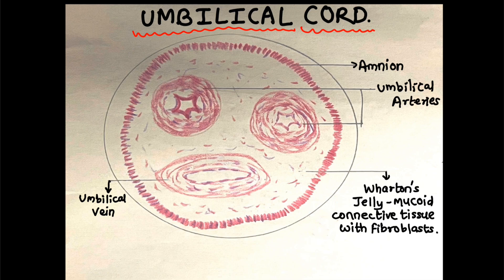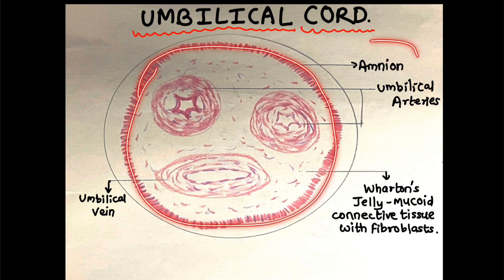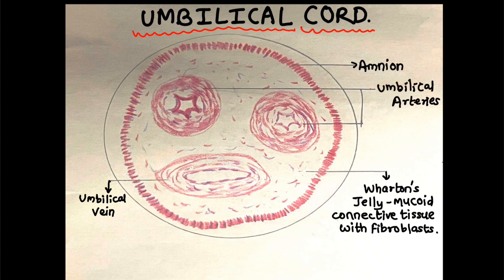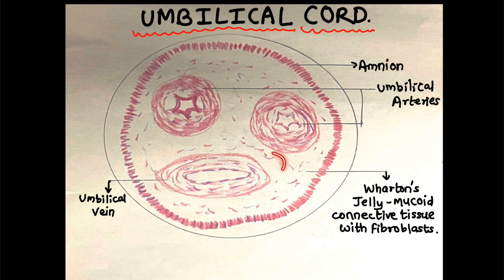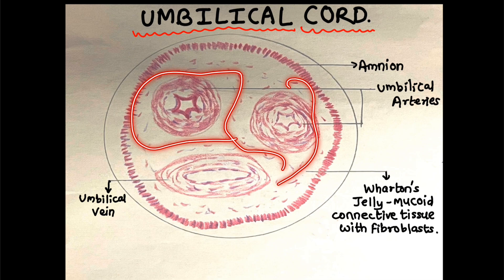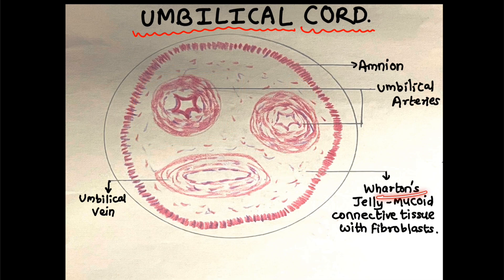The Umbilical Cord is covered by a single layer called Amnion. Inside, there are two Umbilical arteries and one Umbilical vein. Whatever is in the middle is Wharton's Jelly — a mucoid connective tissue with fibroblasts.